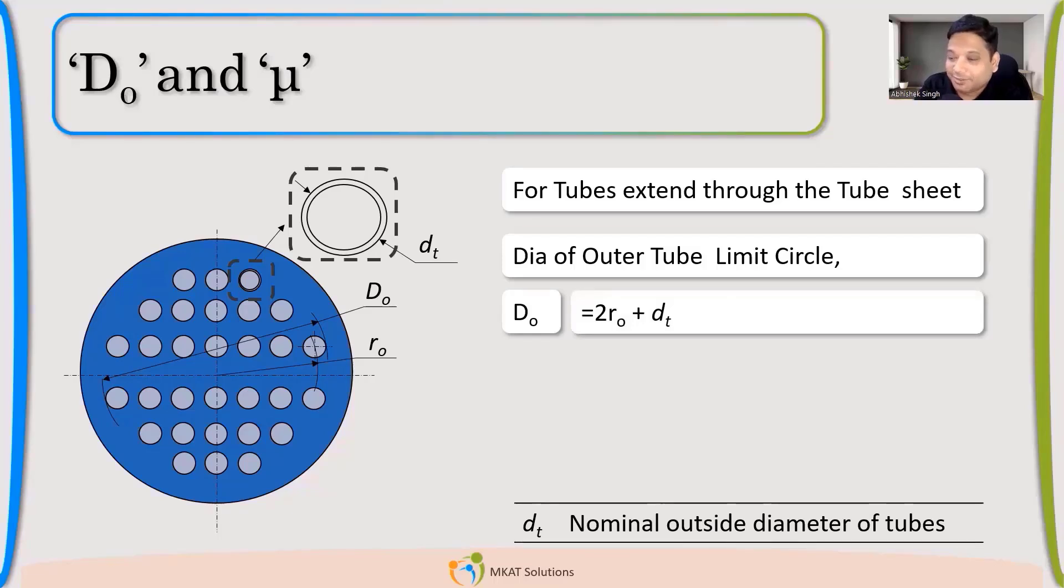So the beauty is, once you calculate, doesn't matter if you know it wrong initially, but once you know the right thing, you will remember it because you have put some thought behind it. So 2R0 plus DT is your D0.